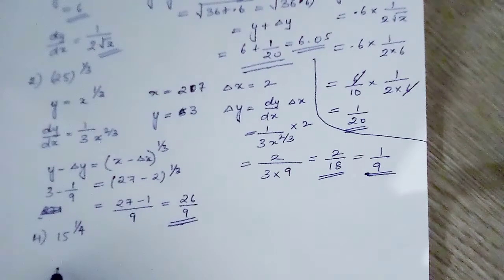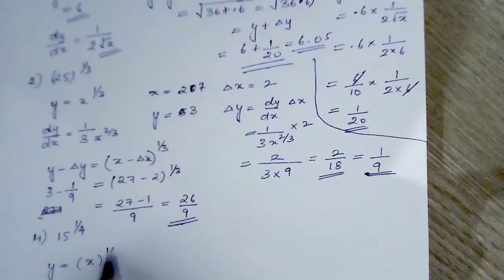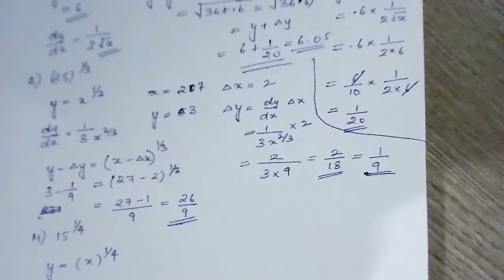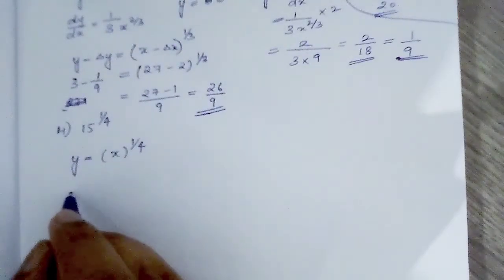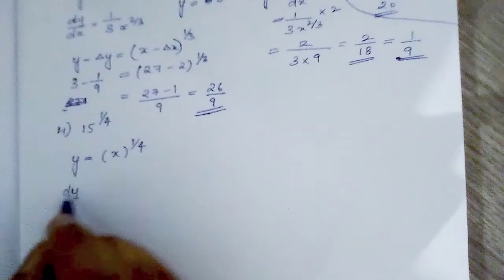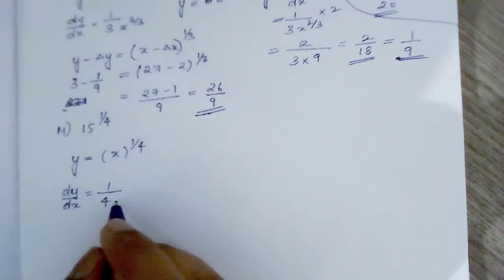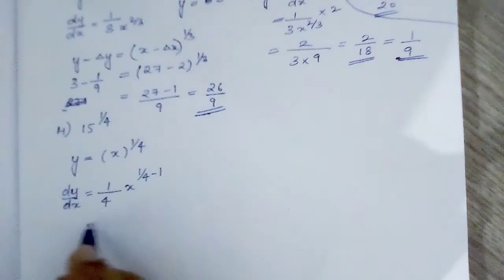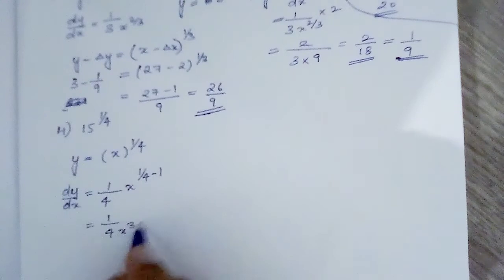Now let us move to the next question. y is equal to x raised to 1 by 4. dy by dx equals 1 by 4 x raised to 1 by 4 minus 1, which is 1 by 4 x raised to negative 3 by 4.